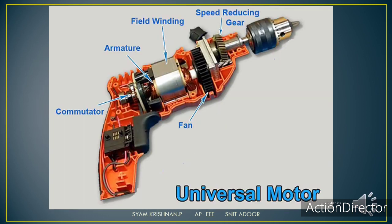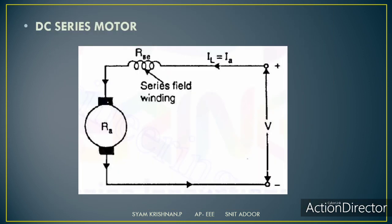One example is a drilling machine. This drilling machine uses a universal motor. Let's look at a normal DC series motor circuit diagram. In this circuit, the field winding is connected in series with the armature winding. The series-connected electromagnets excite the field winding — this is called a DC series motor.